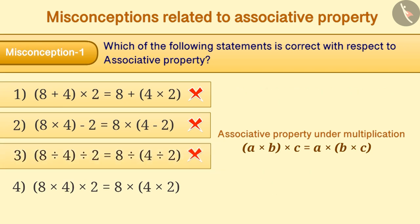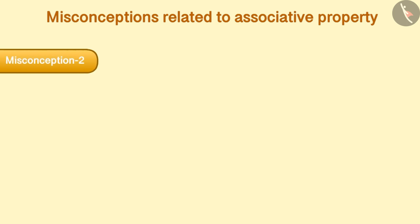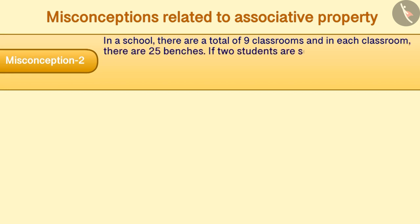With the correct understanding of associative property, option 4 is chosen which is the correct answer. Misconception 2. In a school, there are a total of 9 classrooms and in each classroom there are 25 benches. If 2 students are seated on each bench, then find the total number of students in the school.